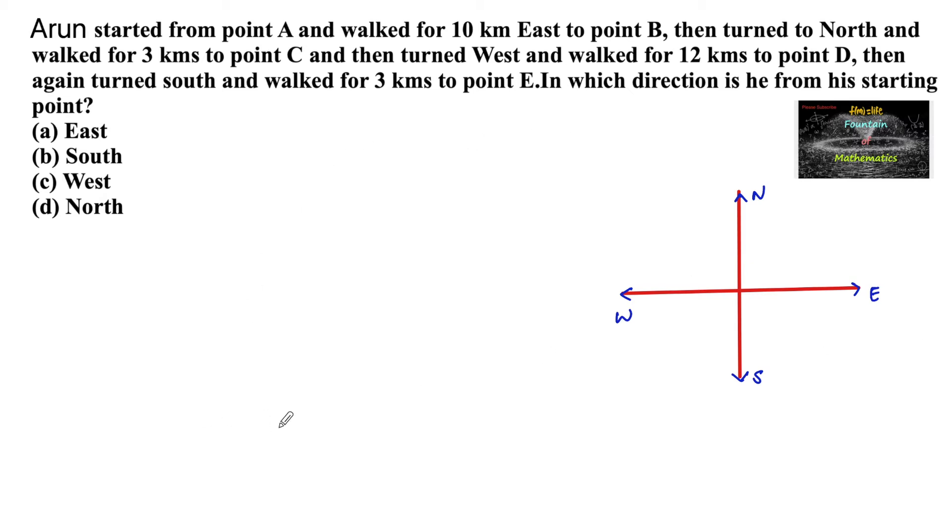So let us mark the starting point, which is given as A, the starting point. He walked for 10 km east, so towards the east direction, he walked for 10 km, and this position is given as point B.